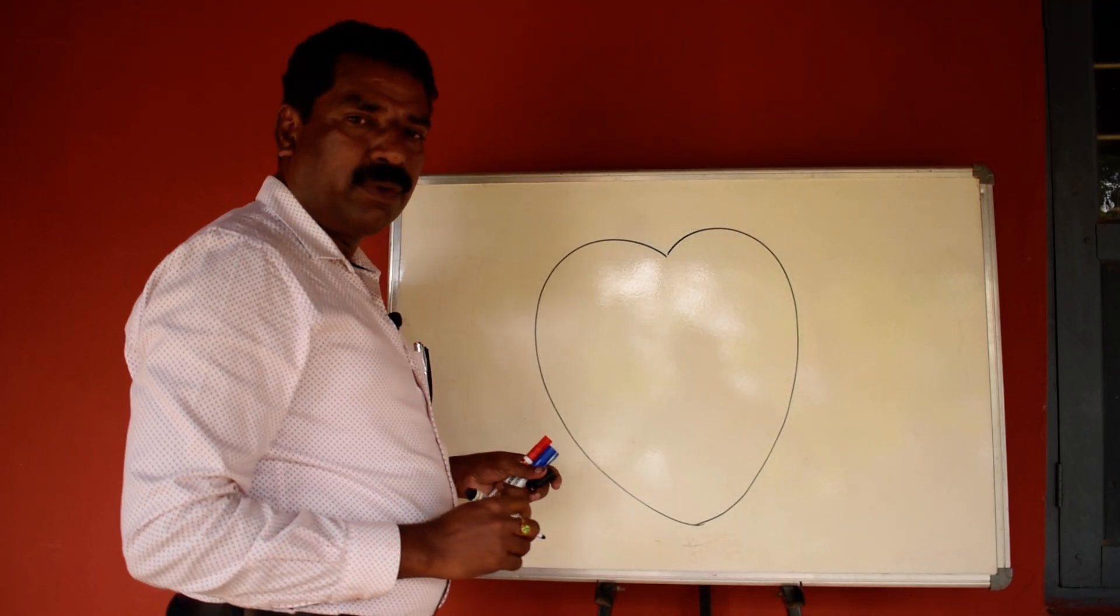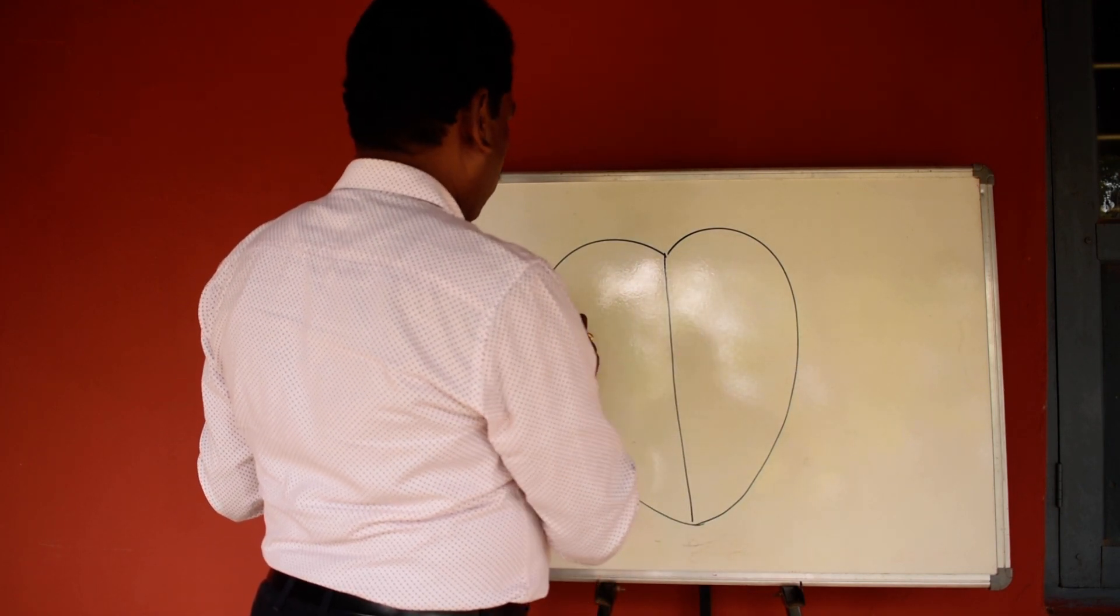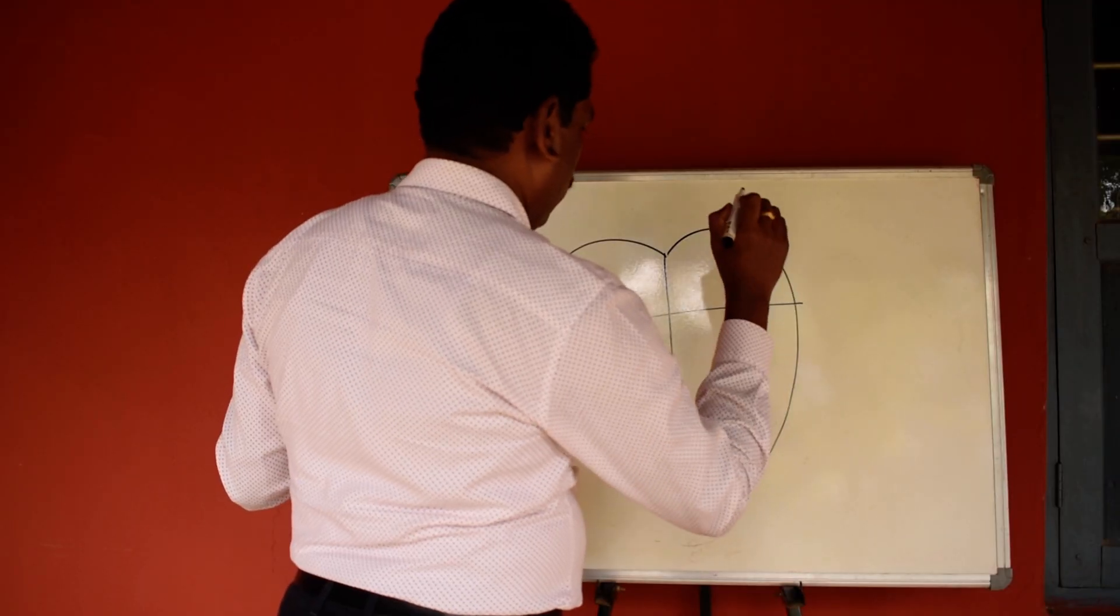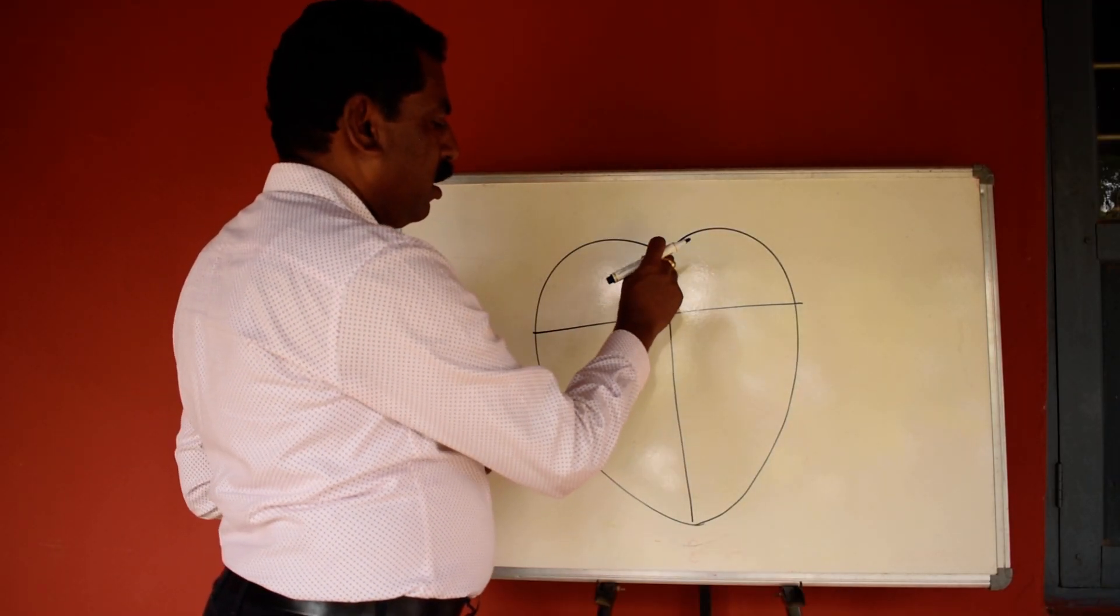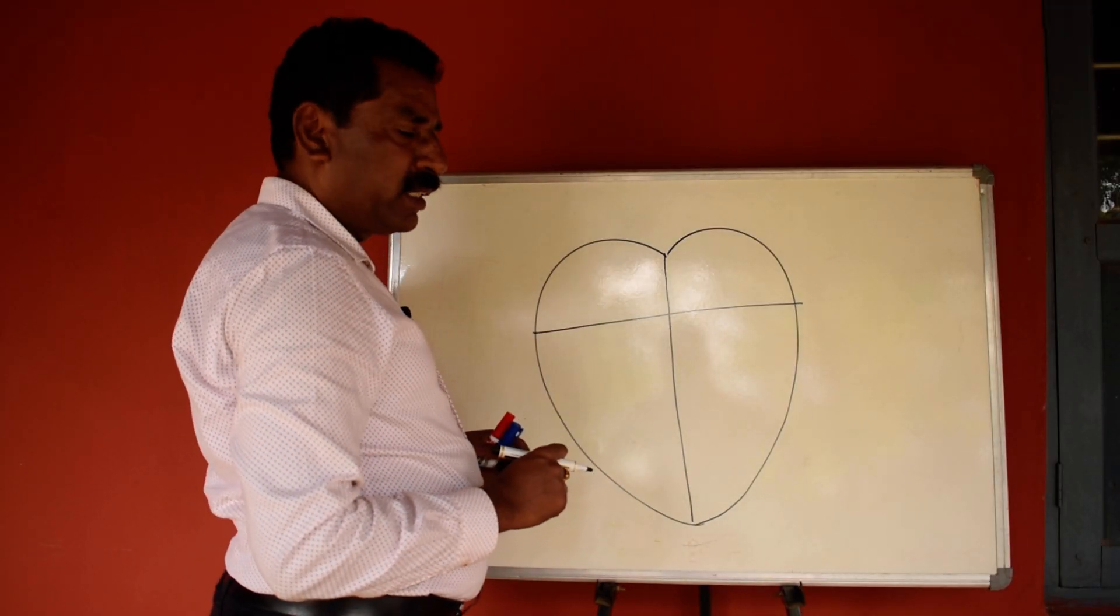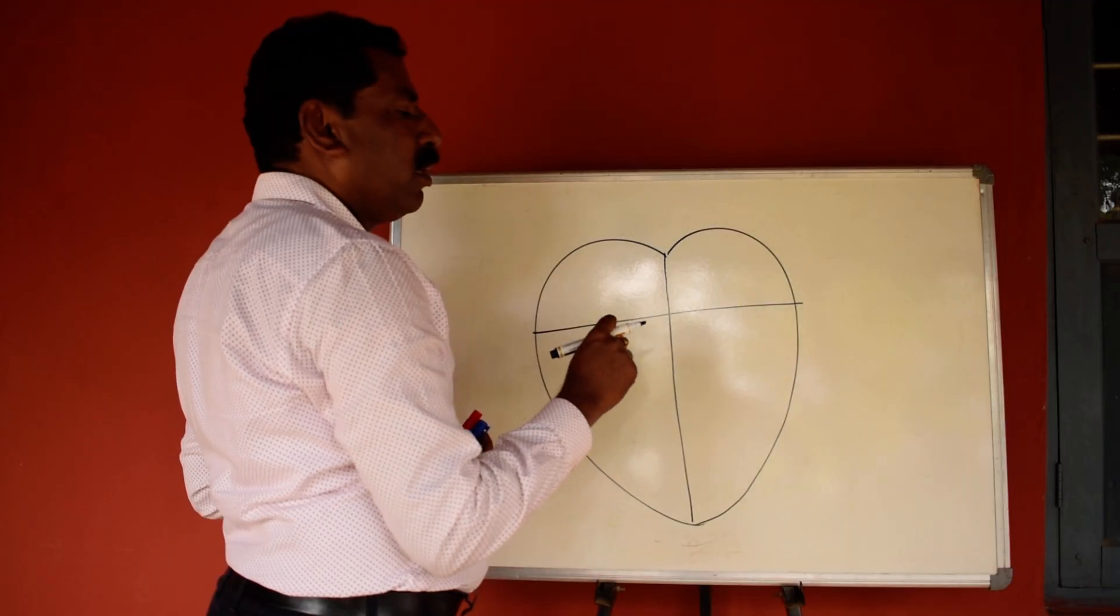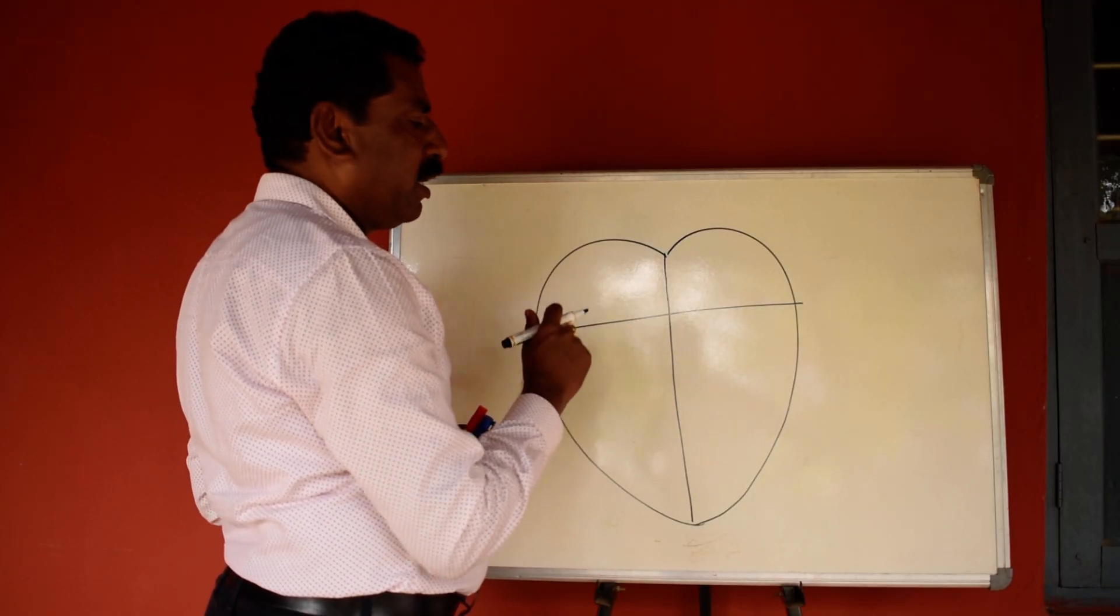First we have to draw this leaf-like structure and one vertical line from the middle of the leaf structure, and another horizontal line at the three-fourths of the heart.